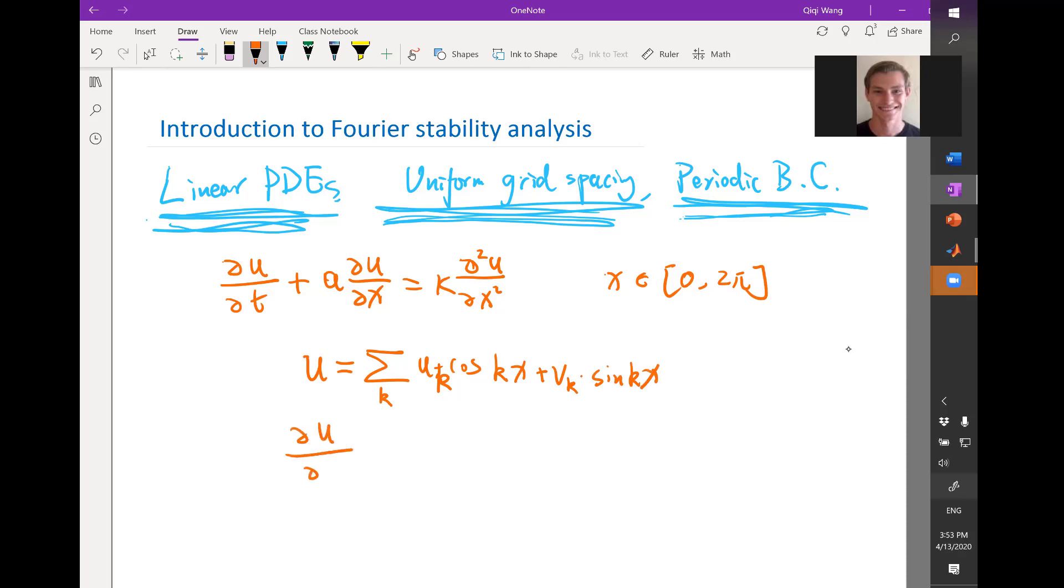The derivative of u is actually another summation of -uk sin(kx). And of course, when you take derivative to cos(kx), you become sine and there is a k multiplied before the sine. And then if you take derivative to sine, you have still vk and another k comes out and the sine becomes cosine.